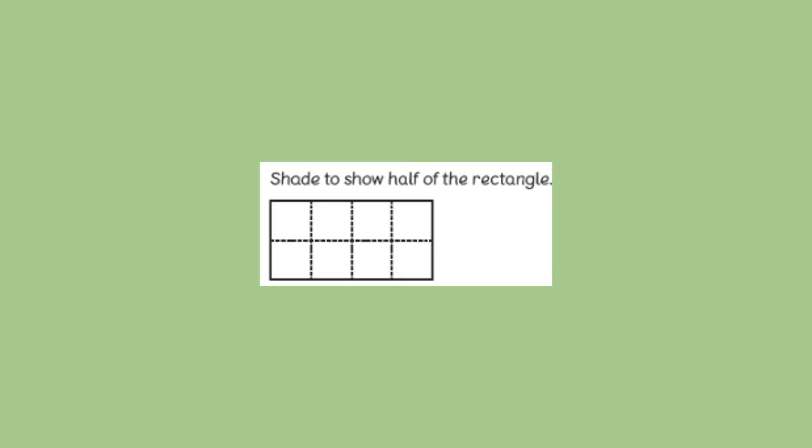Now if we wanted to shade to show half of the rectangle then we need to count how many boxes there are inside it. There are eight boxes or eight squares so what is half of eight? There's more than one way of doing this. Can you work out how many of those smaller squares would be shaded in to show half of the rectangle? To shade in half of the rectangle you would need to shade in four of the small squares. It doesn't matter which four but as long as four were shaded in and that would be half of the eight squares. So that would be half of the rectangle.